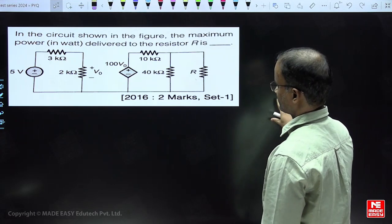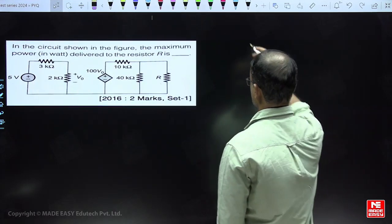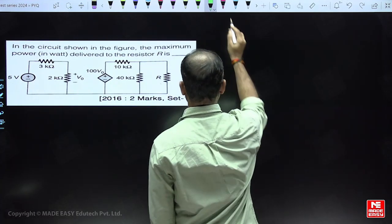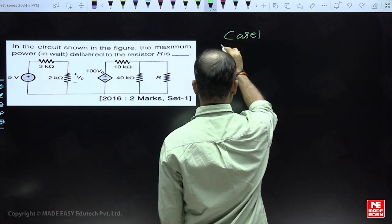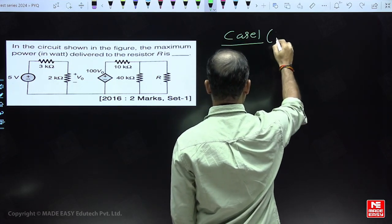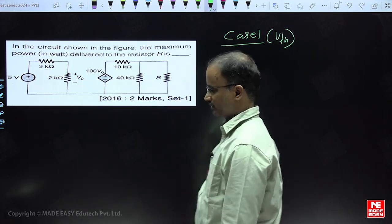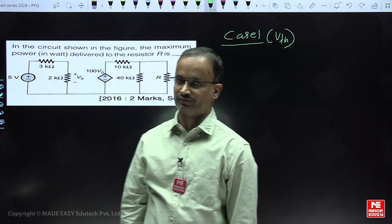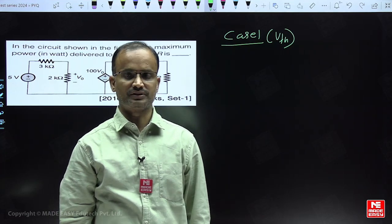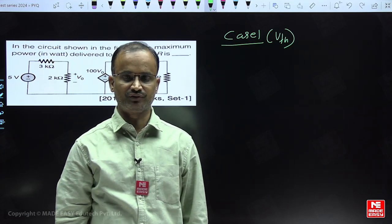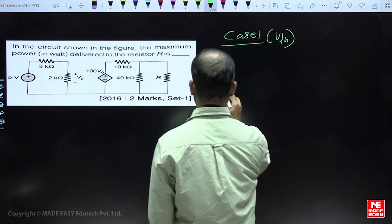Corresponding to Thevenin's theorem, first let us find out the Thevenin's equivalent. The procedure is: disconnect the load resistor and find the open circuit voltage.